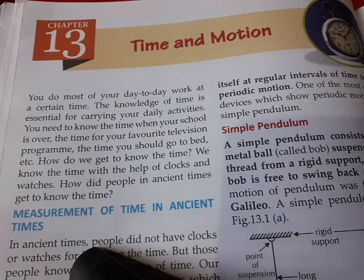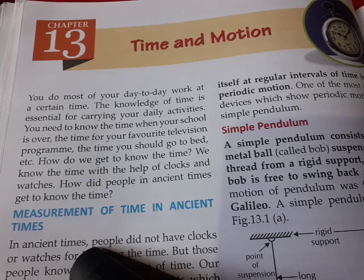I'll tell some digits in the form of time — like 7, 8, 10, 9. So where do we see all these things? On clocks and watches. So how did people in ancient times get to know the time?